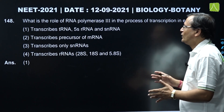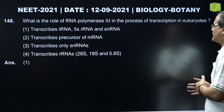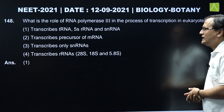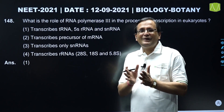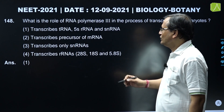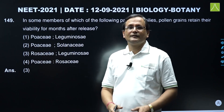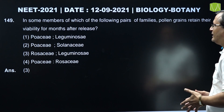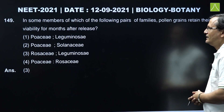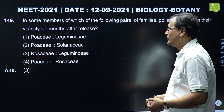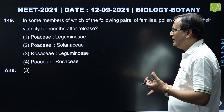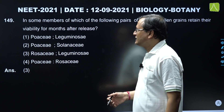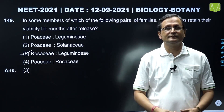Question 148: What is the role of RNA polymerase III in the process of transcription in eukaryotes? RNA polymerase III forms tRNA, 5S rRNA, and small nuclear RNA (snRNA). So the correct answer is option one. Question 149: In some members of which of the following pairs of families do pollen grains retain their viability for months after release? It is observed that Leguminosae and Rosaceae are the families for which this applies, as mentioned in the sexual reproduction in flowering plants chapter. So the correct answer is option third.